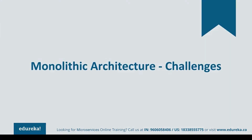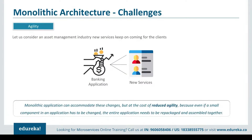Let's understand these challenges one by one. The first challenge is agility. Consider an asset management industry where different clients come with different investments who have to be offered different services. If any new services had to be given to new clients or any new changes had to be made, monolithic application could accommodate these changes but at the cost of reduced agility. This happened because even if a small component in an application had to be changed, the entire application had to be repackaged together.